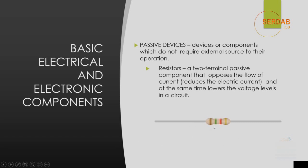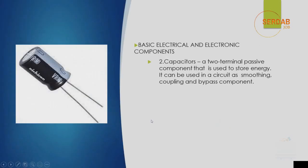As you can see in this image, this is how a resistor looks like, and it usually comes with color bands. A resistor is a two-terminal passive component that opposes the flow of current, which means that it reduces the electric current passing through it and at the same time lowers the voltage levels in a circuit. This component is covered in detail in the practical section of this course.